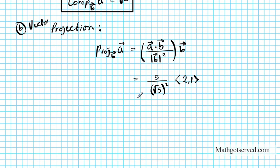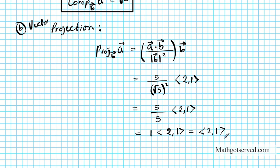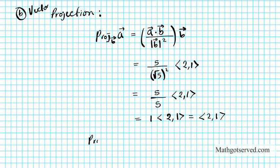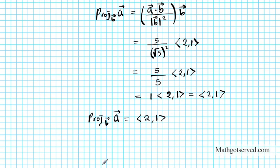Let's simplify. We have 5 over (root 5 squared), which is just 5 over 5, multiplied by (2, 1). Since 5 over 5 equals 1, the final answer is just (2, 1). So the vector projection of vector a onto b is (2, 1).